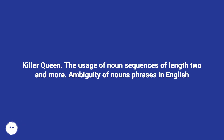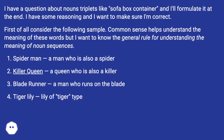Killer Queen. The usage of noun sequences of length 2 and more. Ambiguity of noun phrases in English. I have a question about noun triplets like sofa box container and I'll formulate it at the end. I have some reasoning and I want to make sure I'm correct.